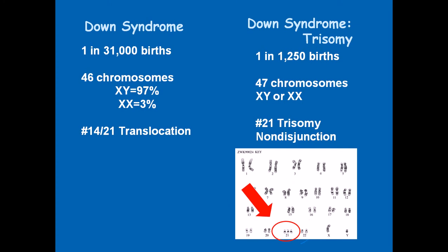Down syndrome occurs in one in 31,000 births statistically. People with Down syndrome have 46 chromosomes but with a translocation between chromosome number 14 and chromosome number 21. Two different types of Down syndrome are possible: one involves a translocation between chromosomes 14 and 21, which results in various abnormalities.